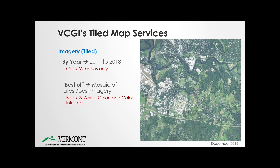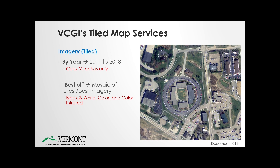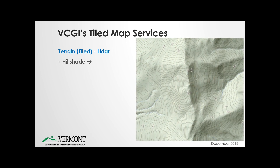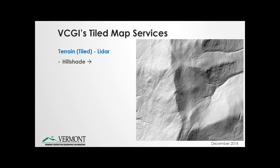Here's an example on the right — this is NAIP imagery at a specific scale. As the user zooms in further, they get more detail, and there's a switch to utilizing the Vermont leaf-off ortho imagery. We also have terrain data derived from LiDAR — for example, hillshade overlain with contours, as well as the straight hillshade without contours.